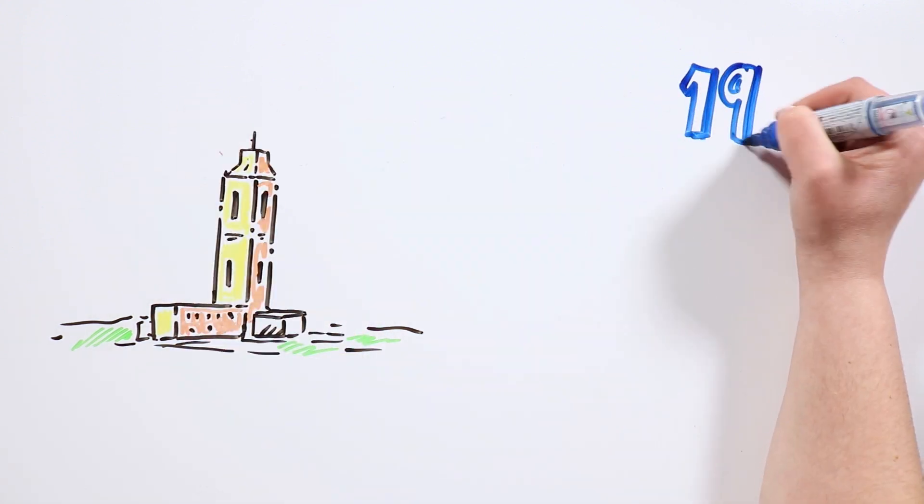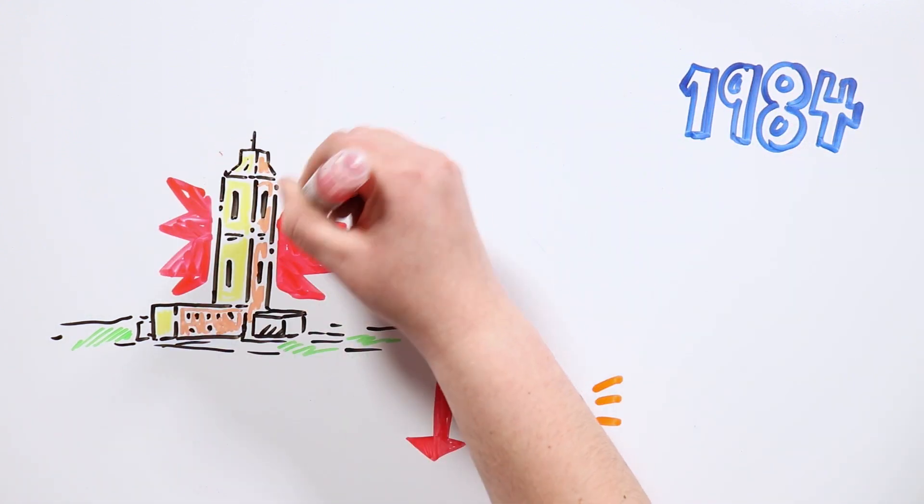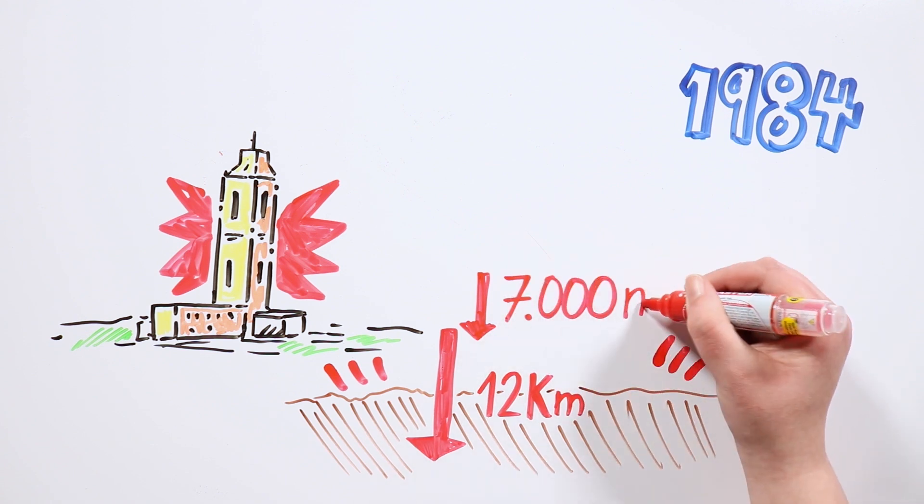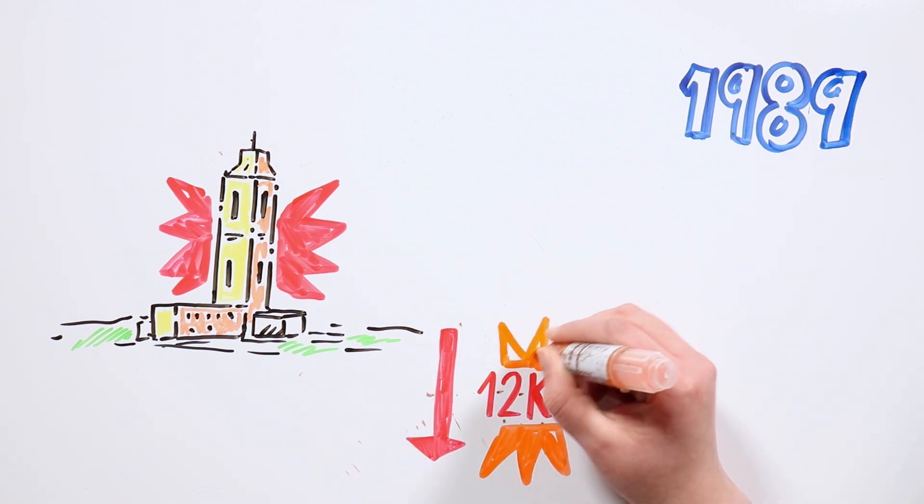In fact, in 1984, upon reaching 12 kilometers, a terrible accident occurred. The structure collapsed, and the hole was covered with about 5,000 meters of earth, forcing them to start drilling again from the 7,000 meter level.